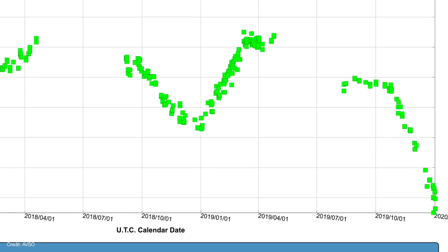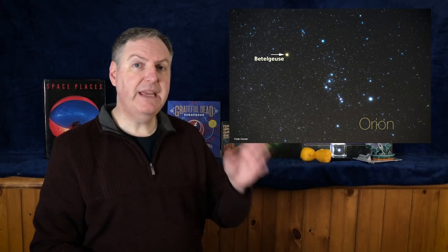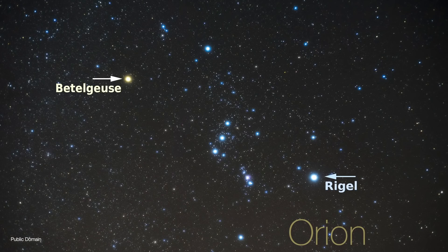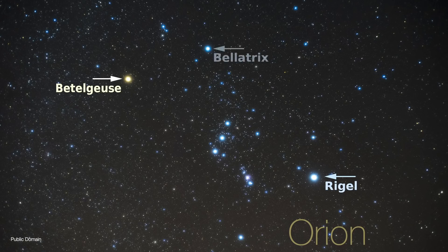At least it was before it started fading. In fact, you can go out and see this for yourself. Normally, Betelgeuse is roughly as bright as Rigel in the constellation Orion. But now it appears to be closer in brightness to Bellatrix.